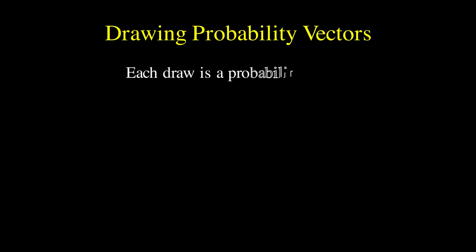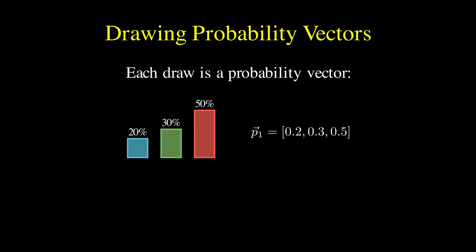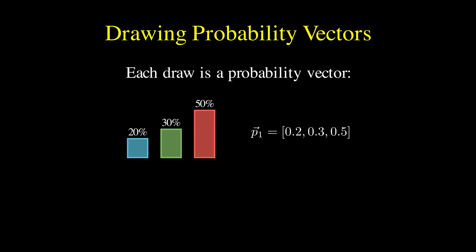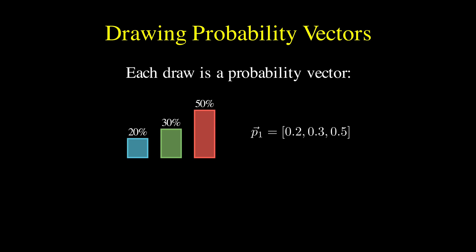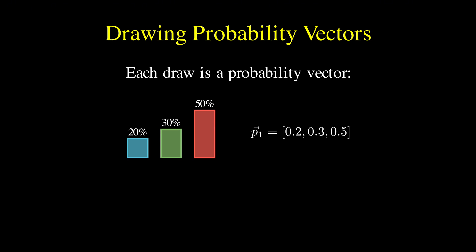When you draw from a Dirichlet distribution, instead of getting a single probability like you do with beta, you get an entire vector of probabilities, one for each category, and these probabilities always sum to 1. You might draw the vector 0.2, 0.3, 0.5, meaning there's a 20% chance for math, 30% for science, and 50% for English.